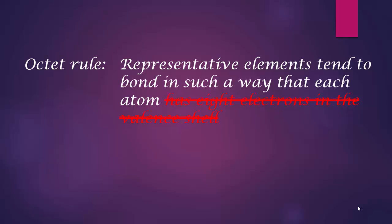But we know that helium, hydrogen, lithium will not have 8 electrons in the valence shell. They'll only have 2 at most. So we need to change it slightly and say that the representative elements tend to bond in such a way that they achieve noble gas configuration. And this is probably the best definition of the octet rule.